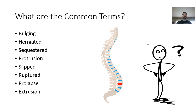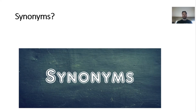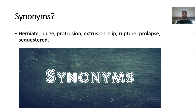This leads me into my next point looking at synonyms. A synonym is any type of word that has a very similar or the exact same meaning as another word, and it can almost be used interchangeably. So when you look at those terms — herniate, bulge, protrusion, extrusion, slip, rupture, prolapse, sequestered — they are all very similar and they could all have very similar references and meanings.